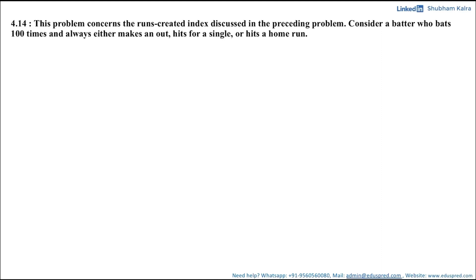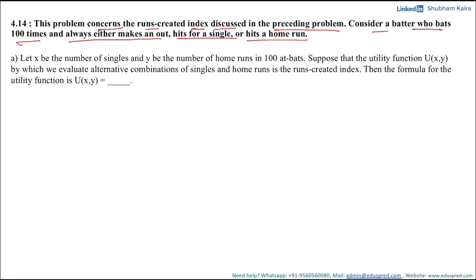In this video, we will be solving this problem which says: this problem concerns the runs created index discussed in the preceding problem. Consider a batter who bats 100 times and always either makes an out, hits a single, or hits a home run. Let x be the number of singles and y be the number of home runs in 100 at-bats. The utility function used to evaluate alternative combinations of singles and home runs is the runs created index, so we need to find the formula for u(x, y).